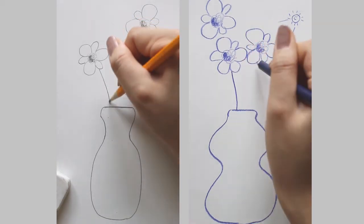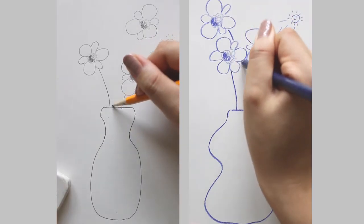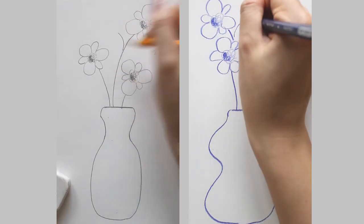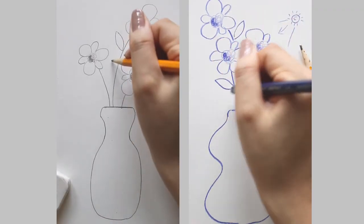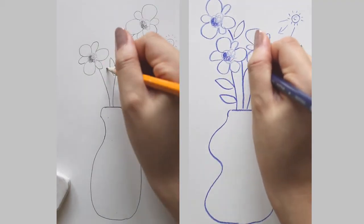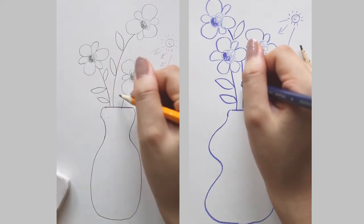Draw the stem for each flower with a simple slightly curved line. Now, let's draw some leaves. Draw a leaf shape with two curves touching each other at both ends. Then draw a straight line across the shape.